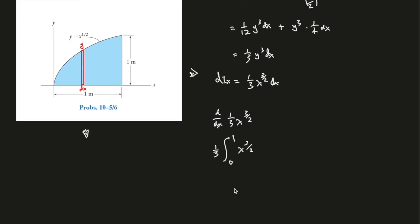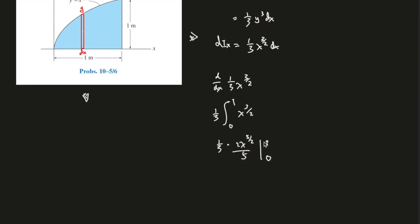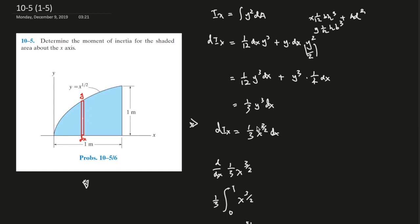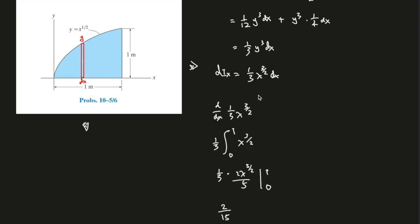Right, that would be 1 times 2/5, which is 2/15, and that should be the moment of inertia around the x-axis. All right, hopefully this question was helpful.